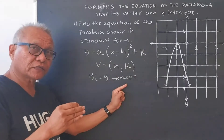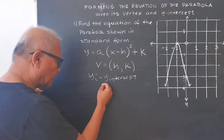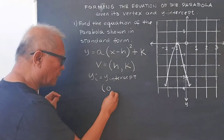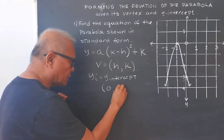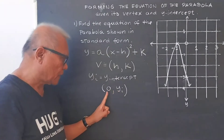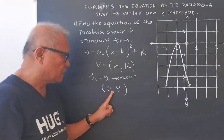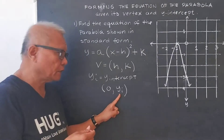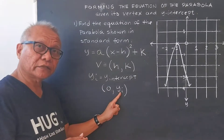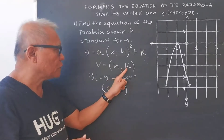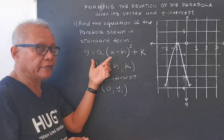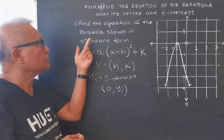The y-intercept in coordinate form is: x is 0, and then our y-intercept value is y. So in coordinate form, the y-intercept is (0, y). We need the vertex and the y-intercept so we can form our equation of the parabola, and afterwards let us write it in standard form.